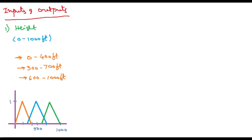Orange color represents low (L), blue is for medium, and green is for high. That's all — this is the identification of membership functions. Here I have used only the intuition method of membership value assignment — simply taken by using intuition. Now coming to the next input, the second input is speed.